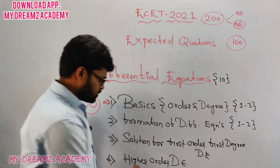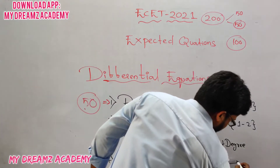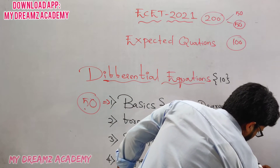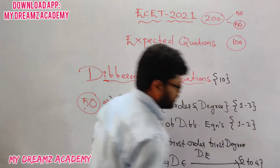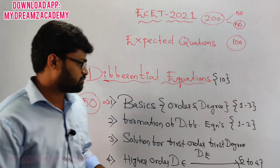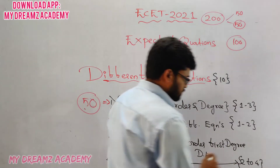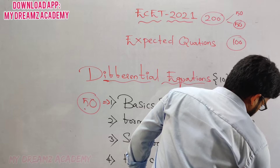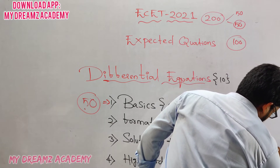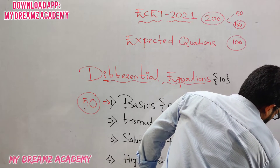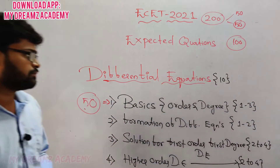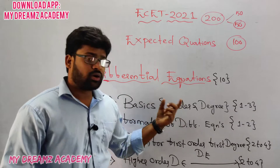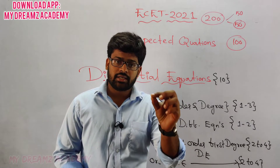From higher order differential equations, you will get 2 to 4 marks. The remaining marks will come from the solution topic, where you will also get 2 to 4 marks. So basics — order and degree — how you need to find order and degree of a differential equation.